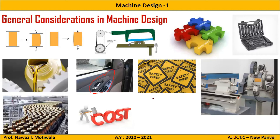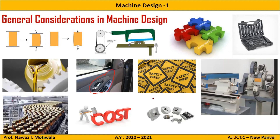The tenth consideration is cost — the cost should be as low as possible. Use standards wherever available; don't go for special-purpose machining or special parts, as that will reduce cost automatically. The final consideration is assembly — it should be easy to assemble. For example, if a coupling has an internal diameter of 20.2 and you design a shaft with diameter 20.3, it will not assemble correctly.